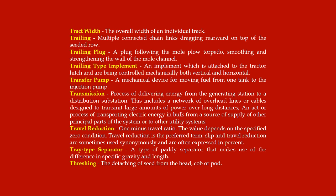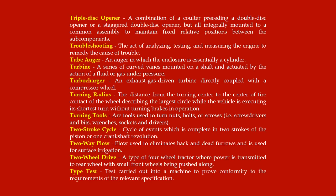Travel reduction: one minus travel ratio; the value depends on the specified zero condition. Travel reduction is the preferred term; slip and travel reduction are sometimes used synonymously and are often expressed in percent. Tray type separator: a type of paddy separator that makes use of the difference in specific gravity and length. Threshing: the detaching of seed from the head, cob, or pod.